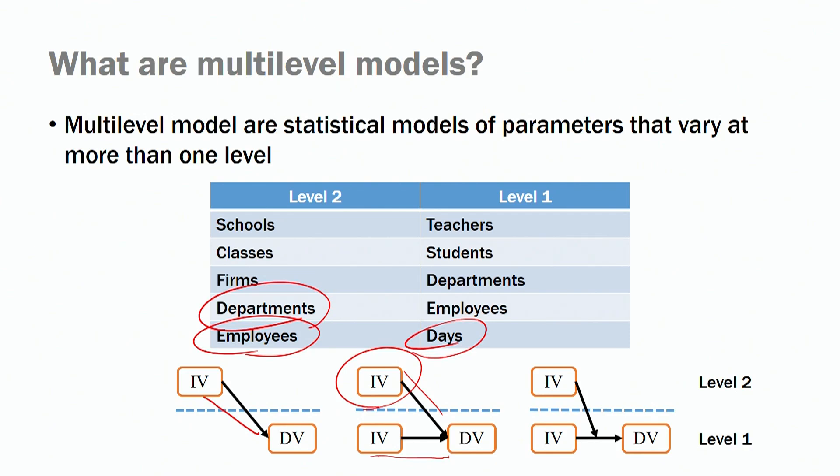We can also test for interactions at different levels of analysis — for example, the leader interacting with follower job satisfaction to predict follower performance. Notice that we don't have level-one variables predicting level-two variables; we don't have follower satisfaction predicting leader behavior, because we don't have within-individual variance to explain if our dependent variable is at level two. This is more technical and we can address that in a later session.